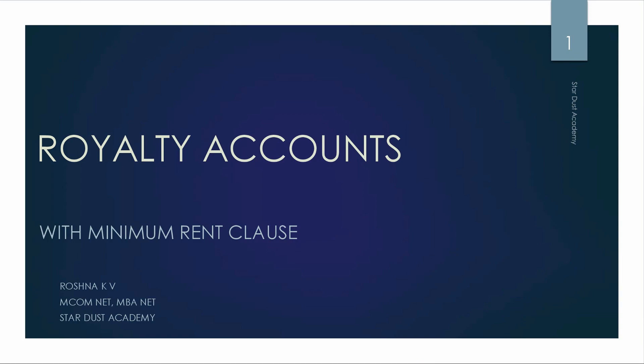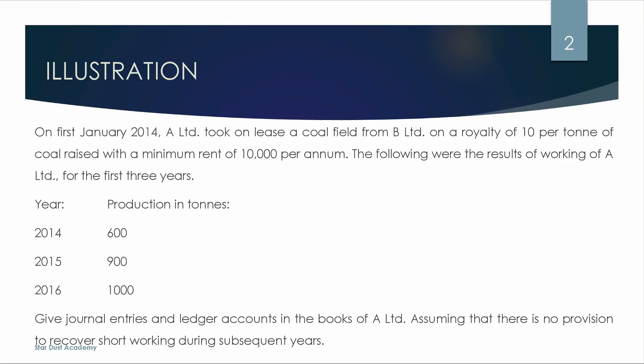In our Royalty Accounts, we have made two types of problems. In our last class, we discussed the general entries. Now let's go to the class. We have a question: On 1st January 2014, A Limited took on lease a coal field from B Limited.